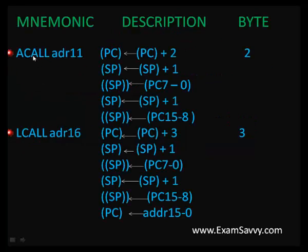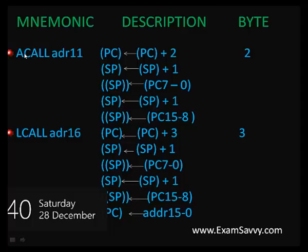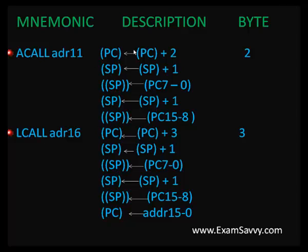ACALL address: if you use ACALL with some address, the size is 2 bytes — one byte for the ACALL instruction and one byte for the address. Wherever the address is present, it will move there and continue executing from there. For a short delay, use ACALL. For a long delay, use LCALL (long call) with an address — the size is 3 bytes. With LCALL, you move to the label and start executing from there until that label ends.